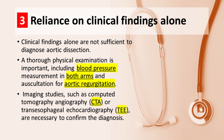Pitfall number 3: Reliance on clinical findings alone. Clinical findings alone are not sufficient to diagnose aortic dissection. A thorough physical examination is important, including blood pressure measurement in both arms and auscultation for aortic regurgitation. Imaging studies, such as computed tomography-angiography (CTA) or transesophageal echocardiography (TEE), are necessary to confirm the diagnosis.